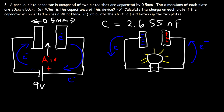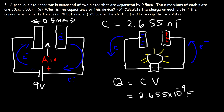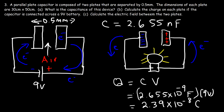Now let's finish part B. The electric charge equals capacitance multiplied by voltage. The capacitance is 2.655×10⁻⁹ farads, and the voltage is 9 volts. The amount of electric charge stored on this capacitor is very small — 2.39×10⁻⁸ coulombs. That's the answer for part B.